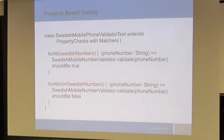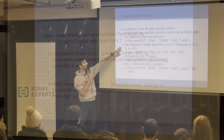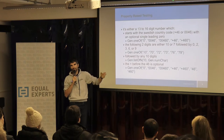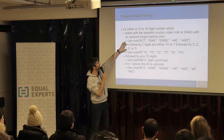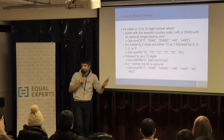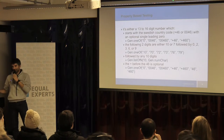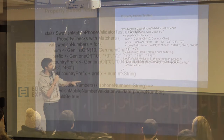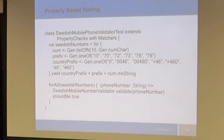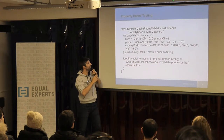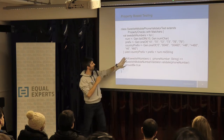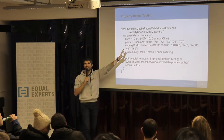How do you get the computer to do this? This is called a generator — it's an important concept in property-based testing. It's the computer generating numbers out of these combinations. Generate a number that starts with this and that. This is Scala code, not very important for now — let's focus on the concepts.